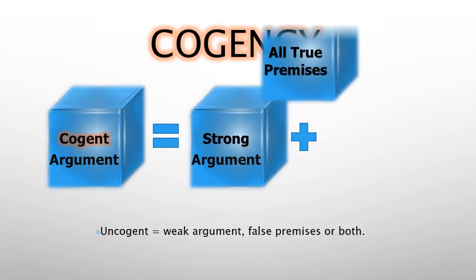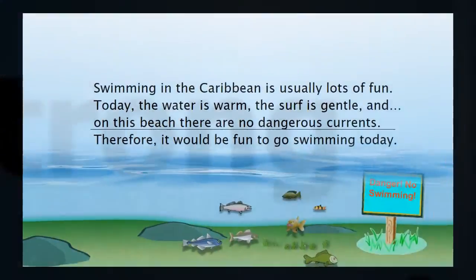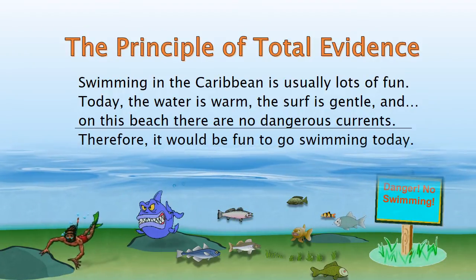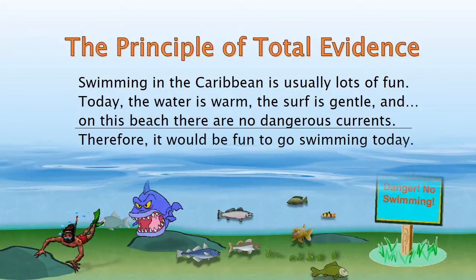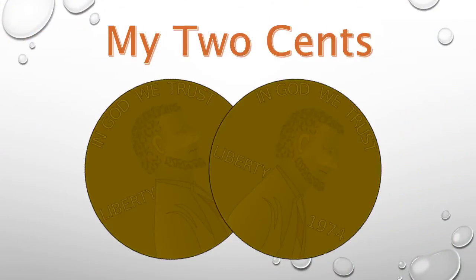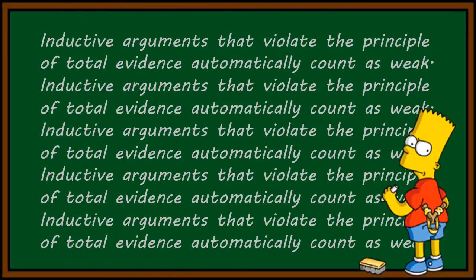You remember that inductive arguments are cogent only if they're strong and have all true premises — we covered that in an earlier lesson. We used an example in which a person was deciding whether or not to go swimming today because it would be fun, and they had lots of evidence that swimming today would be fun, but they overlooked some shark dangers in the water. Inductive arguments that violate the principle of total evidence — taking into account all relevant data before drawing the inductive conclusion — count as weak evidence.